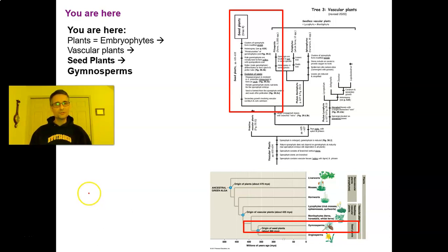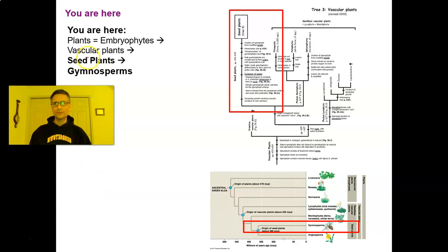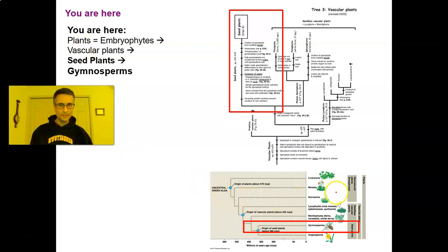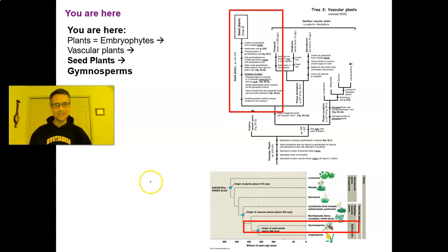Hello, fellow botanists. Welcome to our third lecture on major groups of plants. If you remember, previously we talked about plants, otherwise known as embryophytes. Our first group of plants were liverworts, mosses, and hornworts — the non-vascular plants.